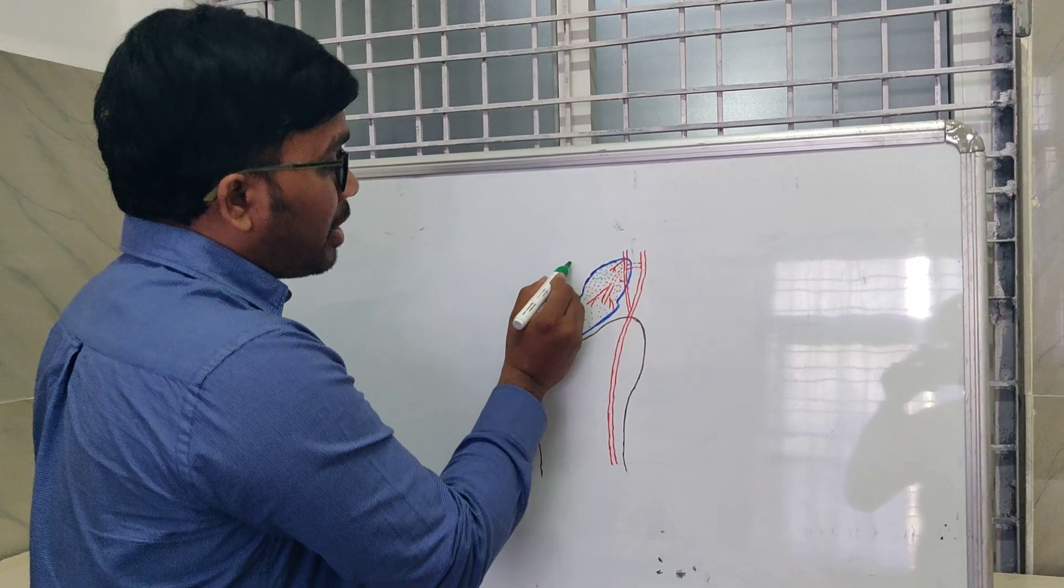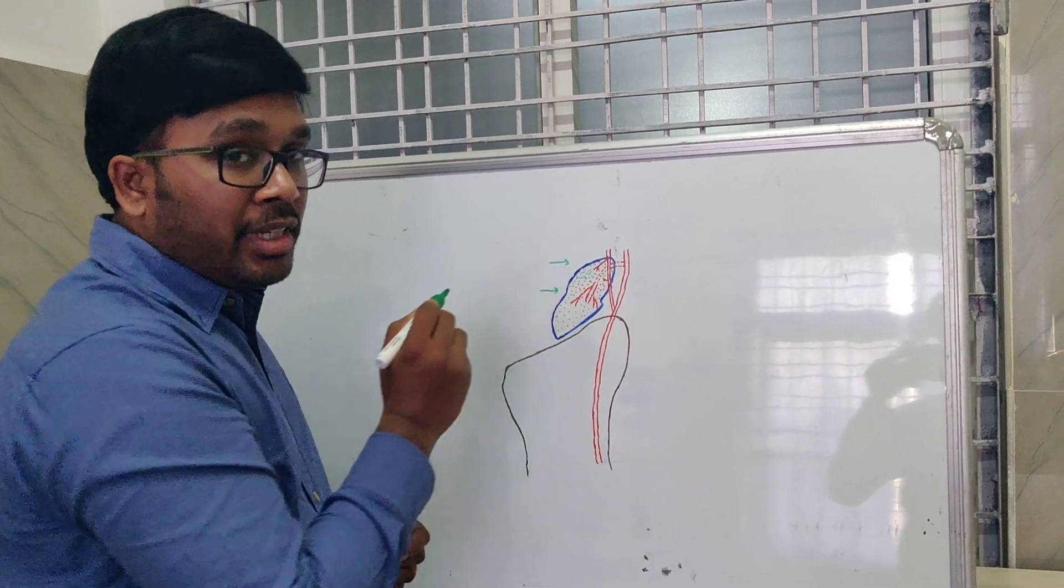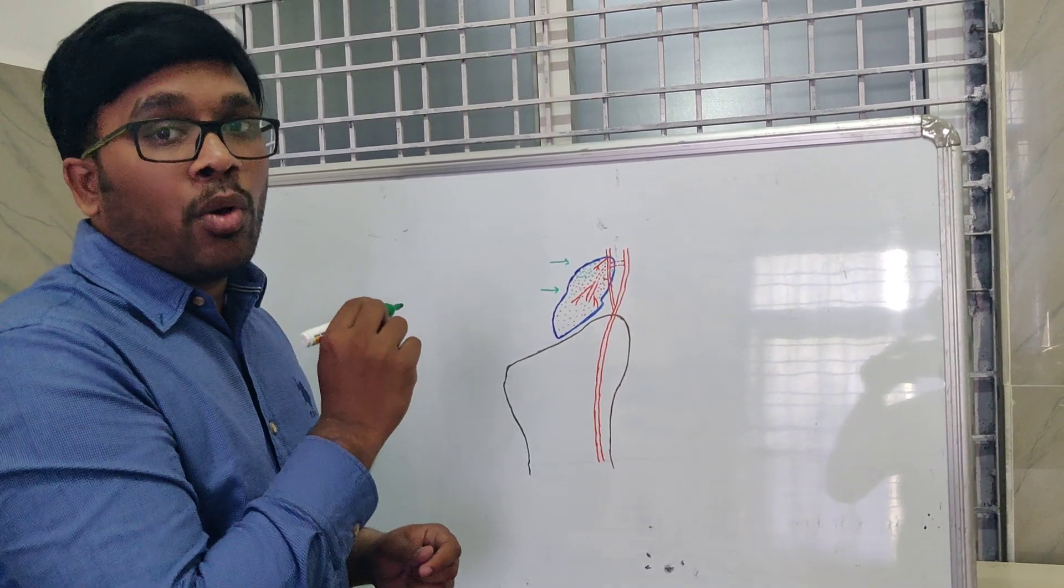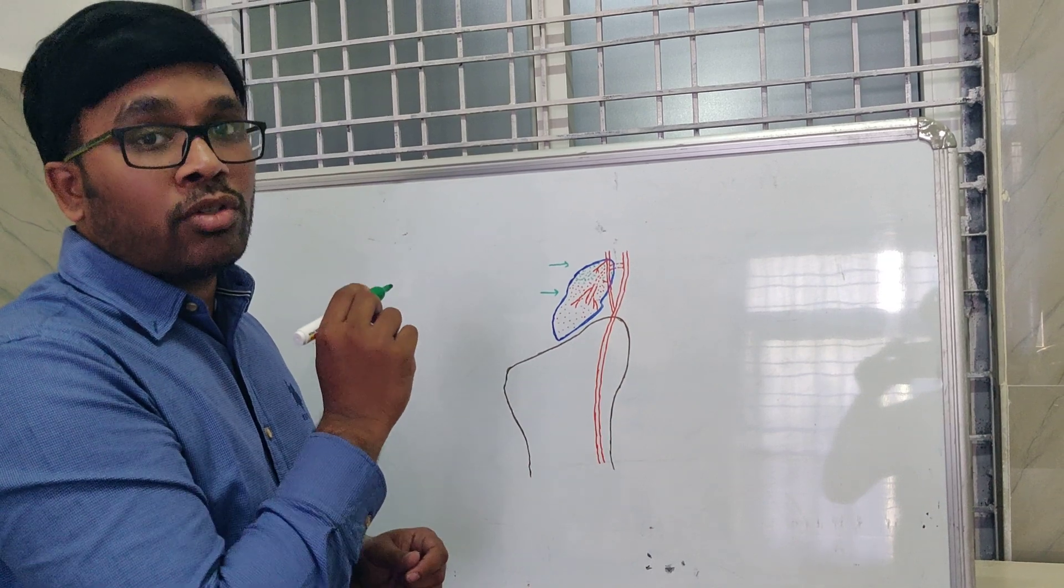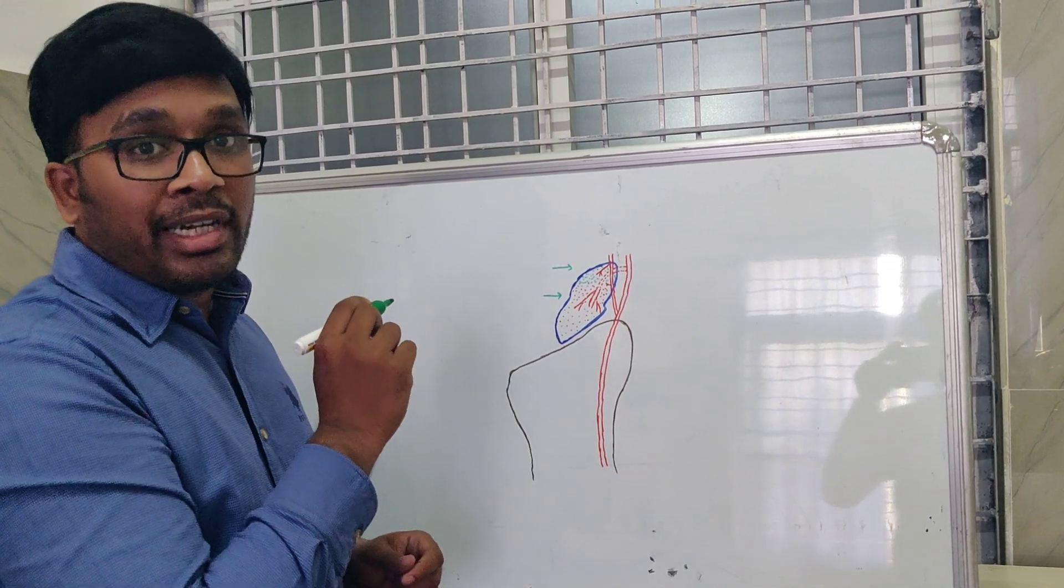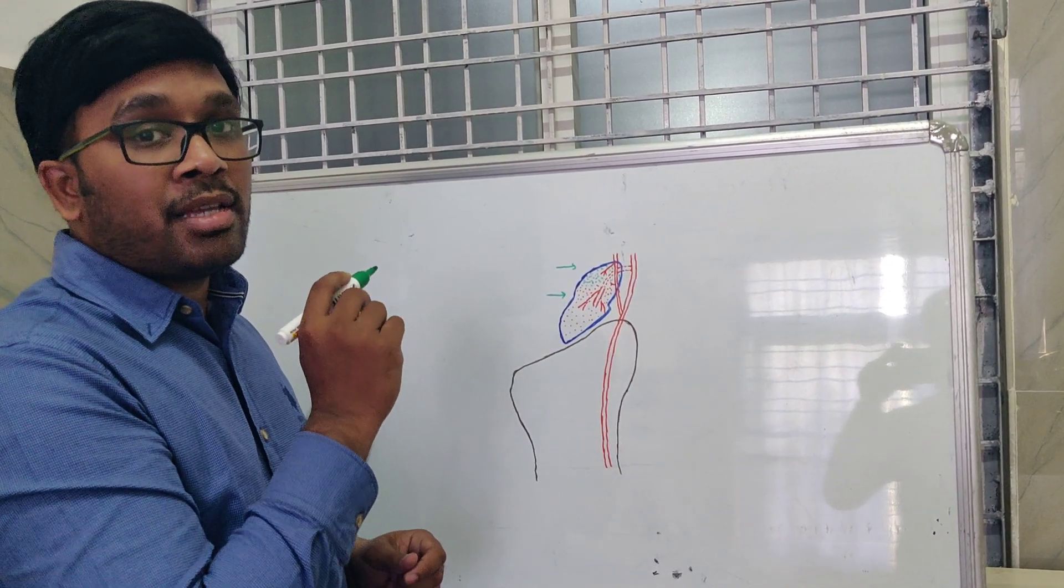The next common fracture is that of the distal pole, where the perfusion is good. So avascular necrosis or nonunion is least common.